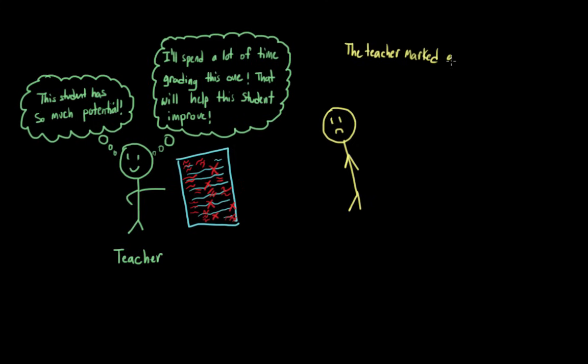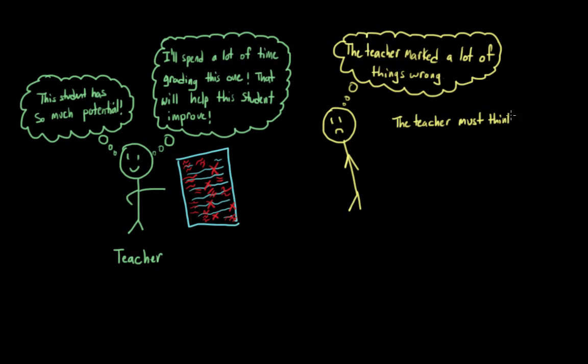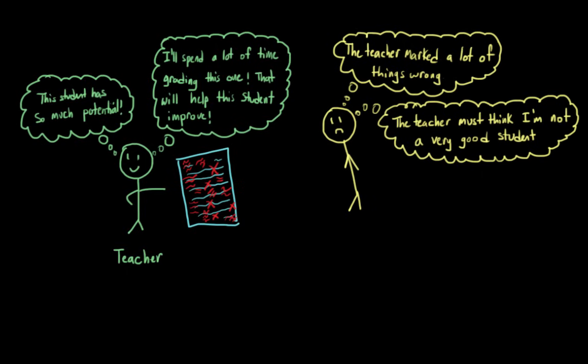First, they might observe that the teacher criticized them harshly on this paper. Second, they think that the teacher probably did so because they see the student as not being very intelligent. Finally, our student comes to the conclusion that, based on this, they're probably not very good at literary analysis.